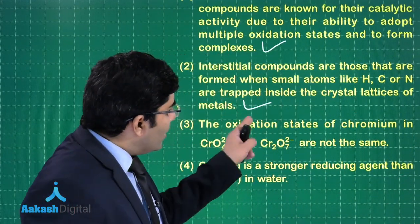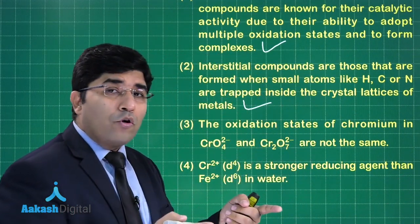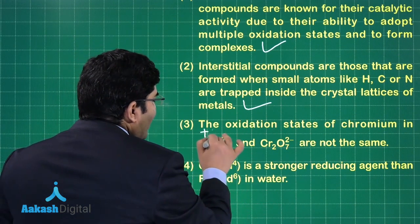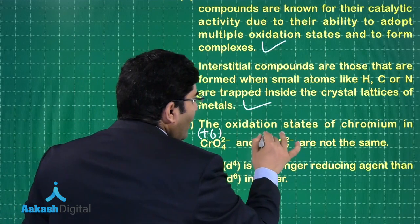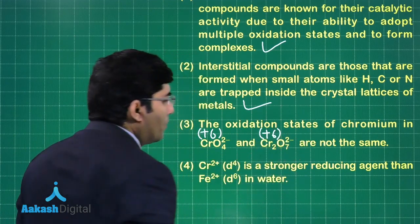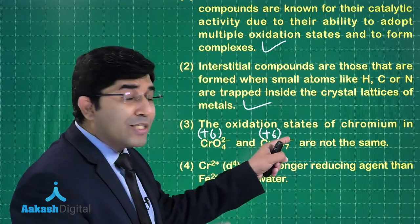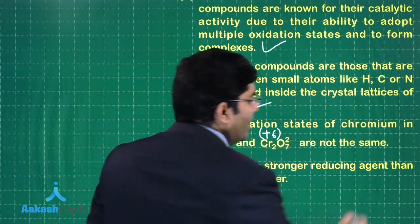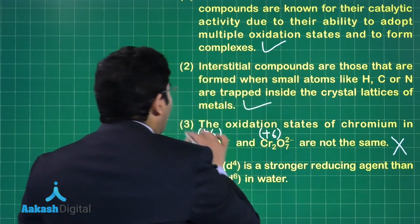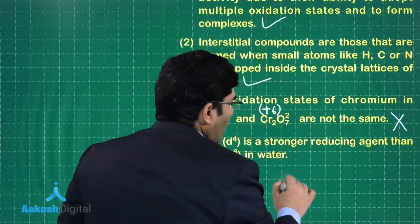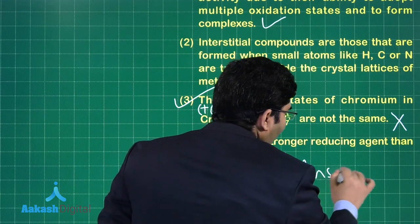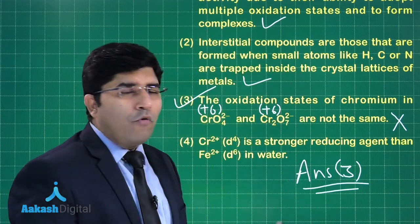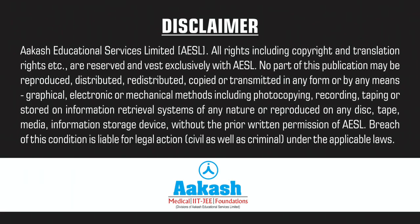The third statement concerns the oxidation state of chromium in chromate ion and dichromate ion. In chromate ion, the oxidation state is +6, and in dichromate ion it is also +6. The statement claims they are not the same, which is incorrect. Therefore, our answer is option number three.